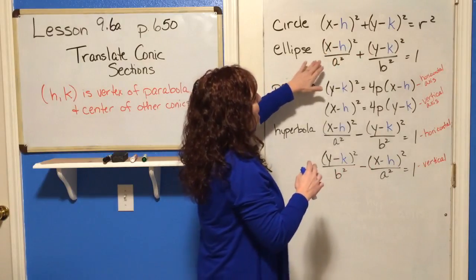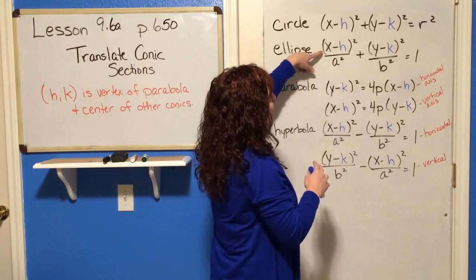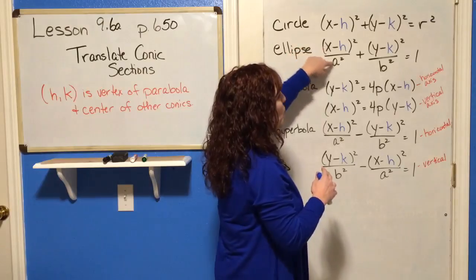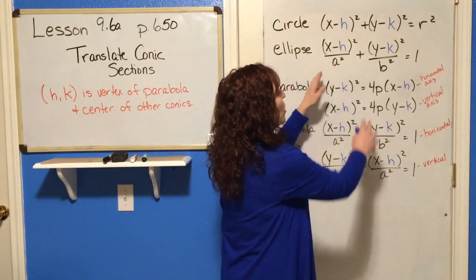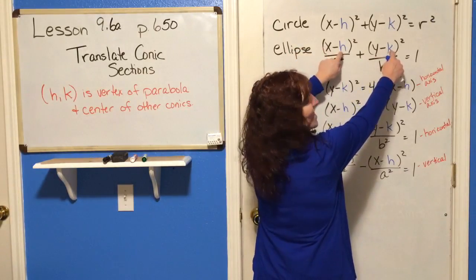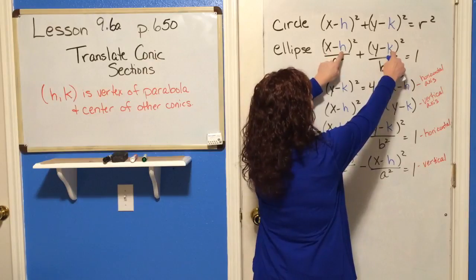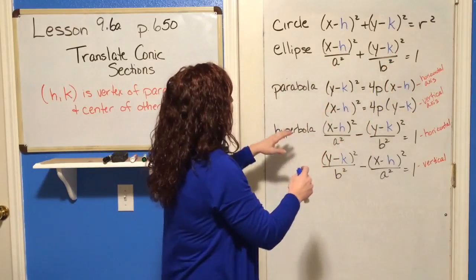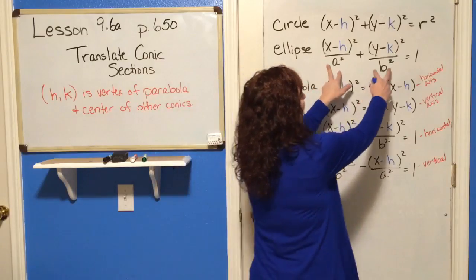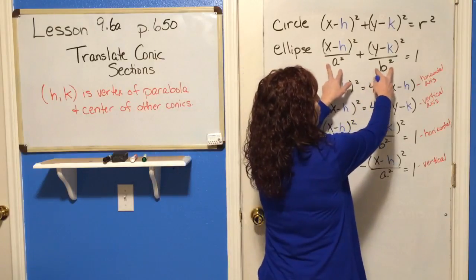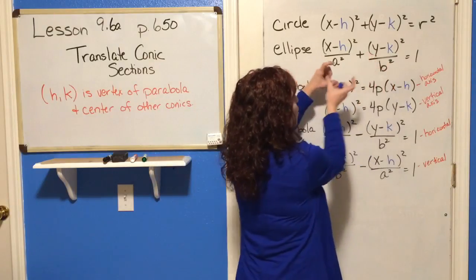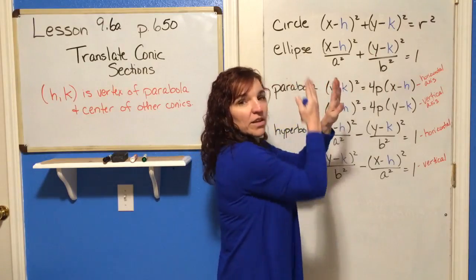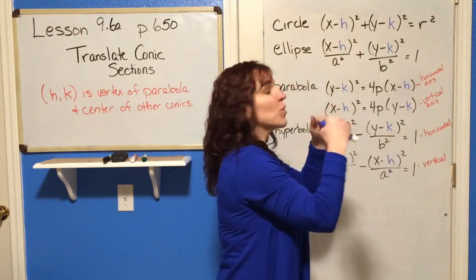For the ellipse, instead of just X squared over A squared plus Y squared over B squared, we're going to put in this H, K as the center of our ellipse. Remember, whether A is larger or B is larger indicates whether your ellipse is elongated up and down or left and right.